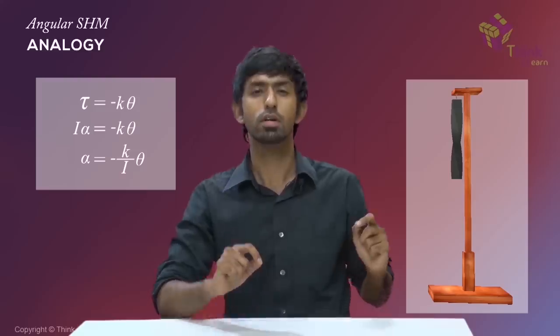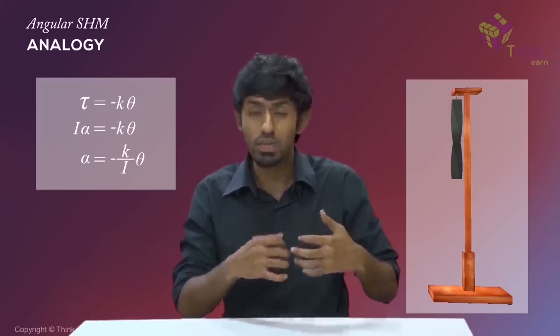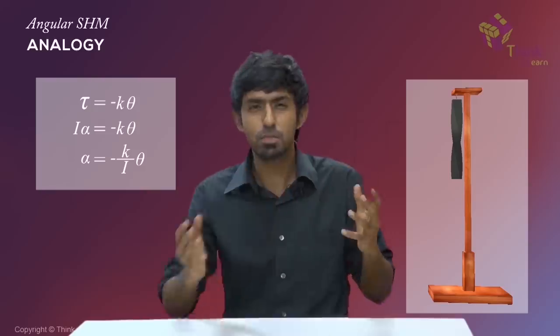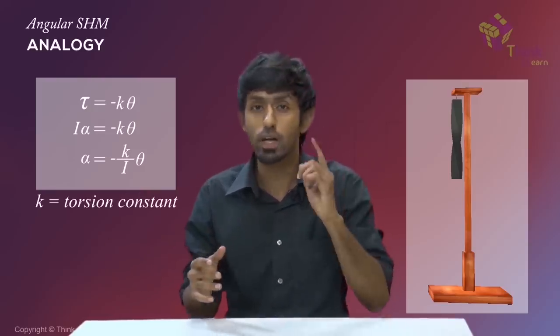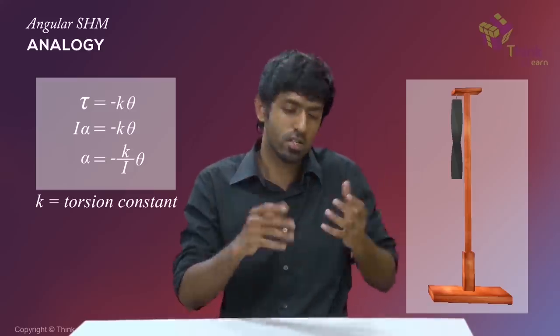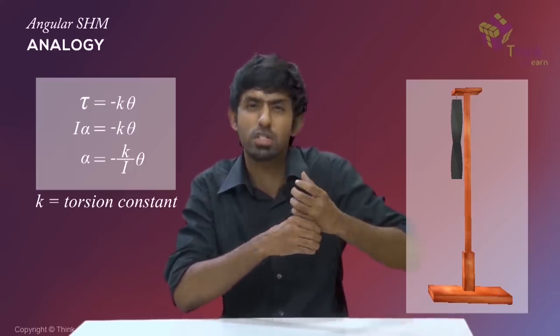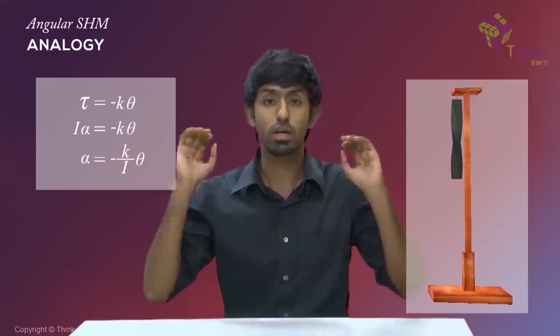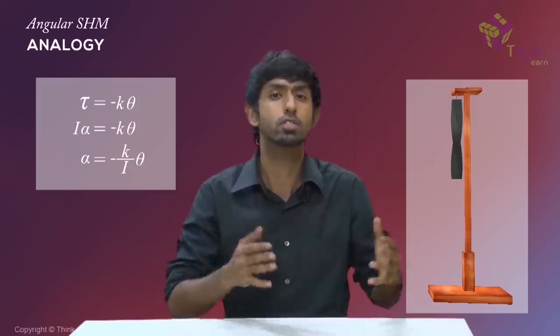So if I alpha equals minus K into theta, your alpha, angular acceleration, will be minus K by I into theta. Now what is that K? For a linear spring, your K was the stiffness constant. Something very similar over here. It'll be called the torsion constant of that particular spring. It gives you, if it's larger then you get a large torque for some amount. It's a very hard thing to twist.